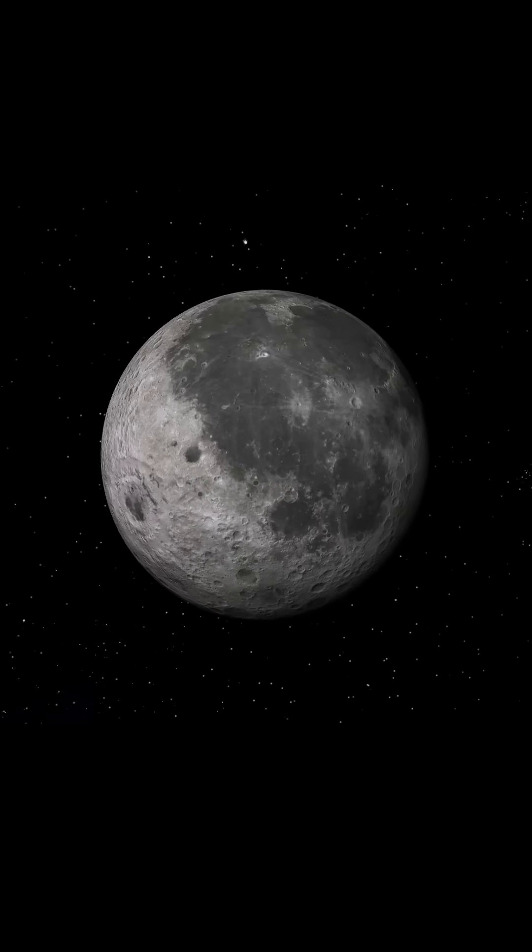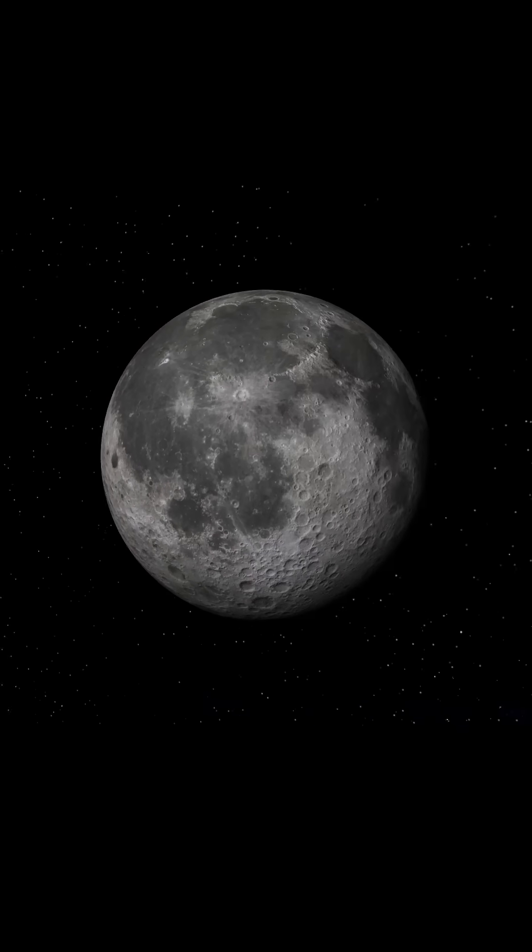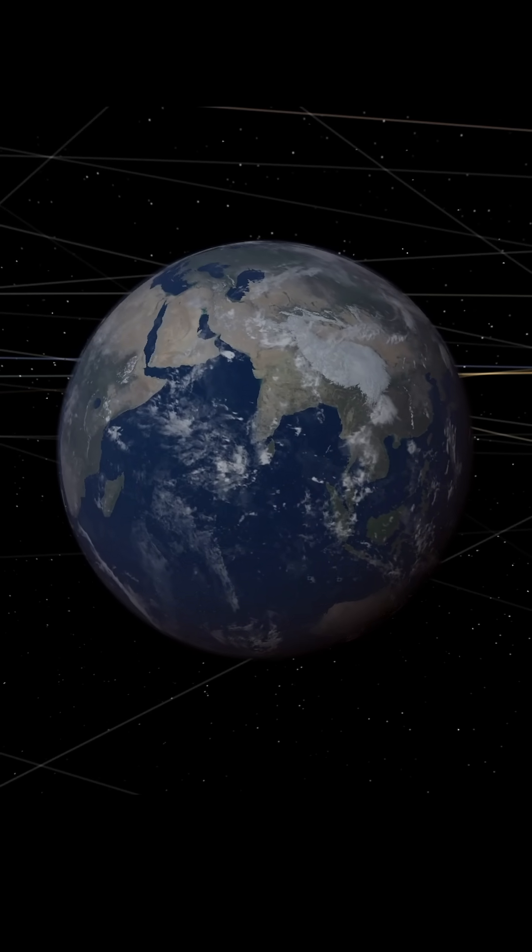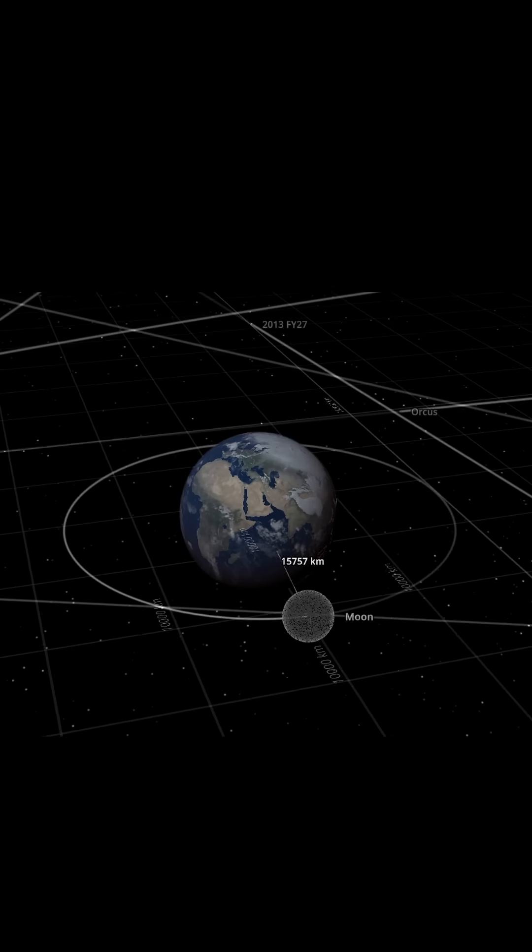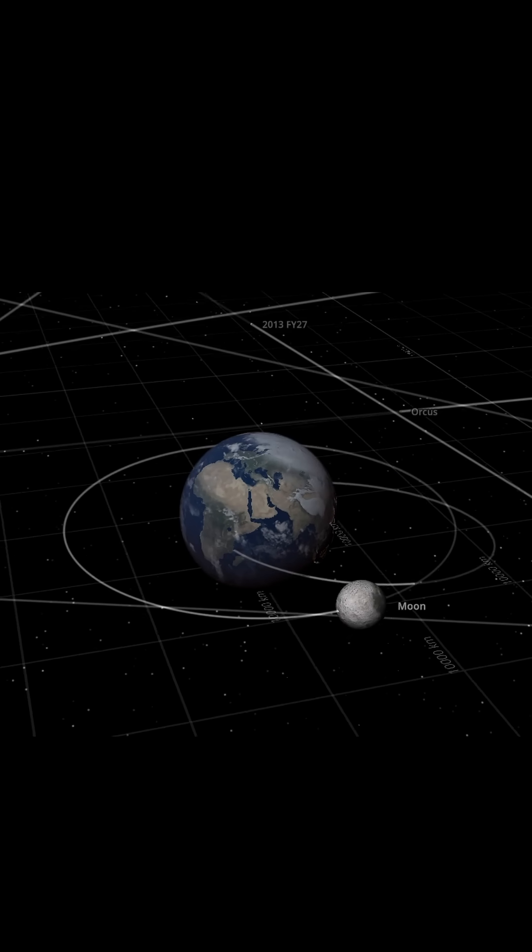What if the Moon orbits Earth very closely? The distance between the Moon and Earth is enormous, around 384,000 kilometers. But what if we reduce this distance to just 15,000 kilometers? Let's see what happens.